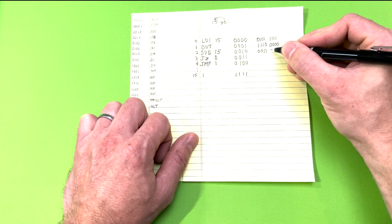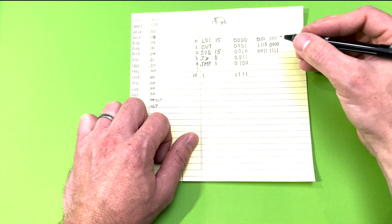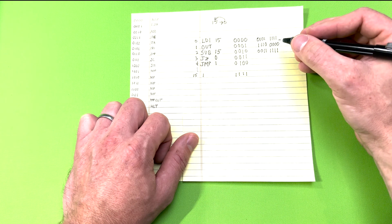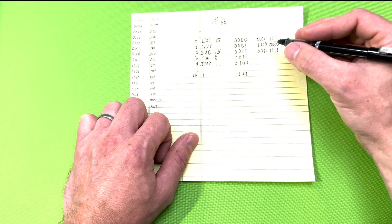The SUB instruction is 0, 0, 1, 1, and the data part is the location in RAM where the value which we are subtracting is located. In this case, it's memory location 15, so we can represent that with all ones again.